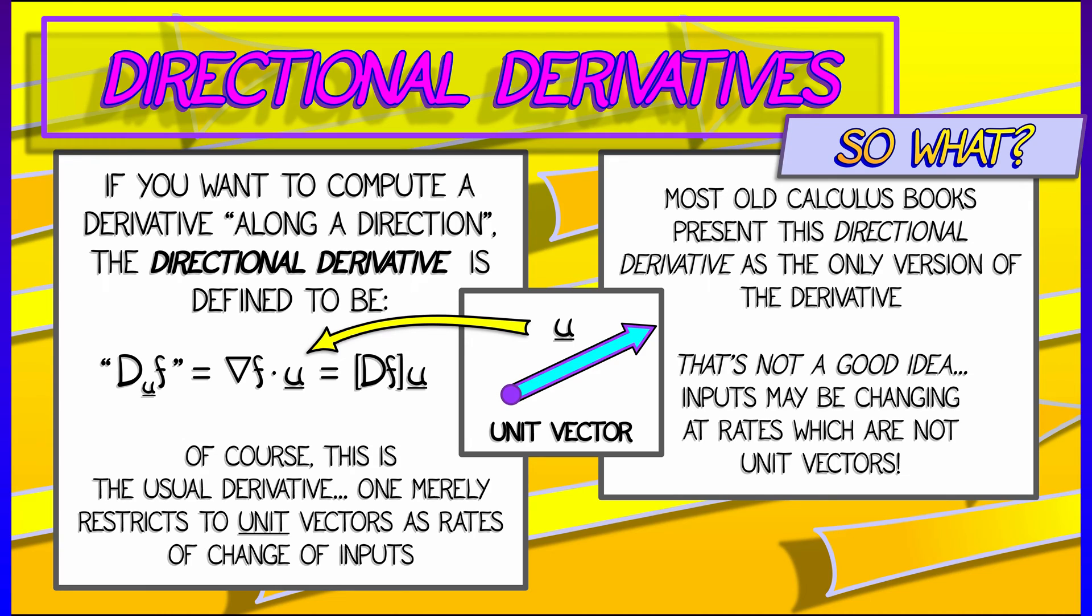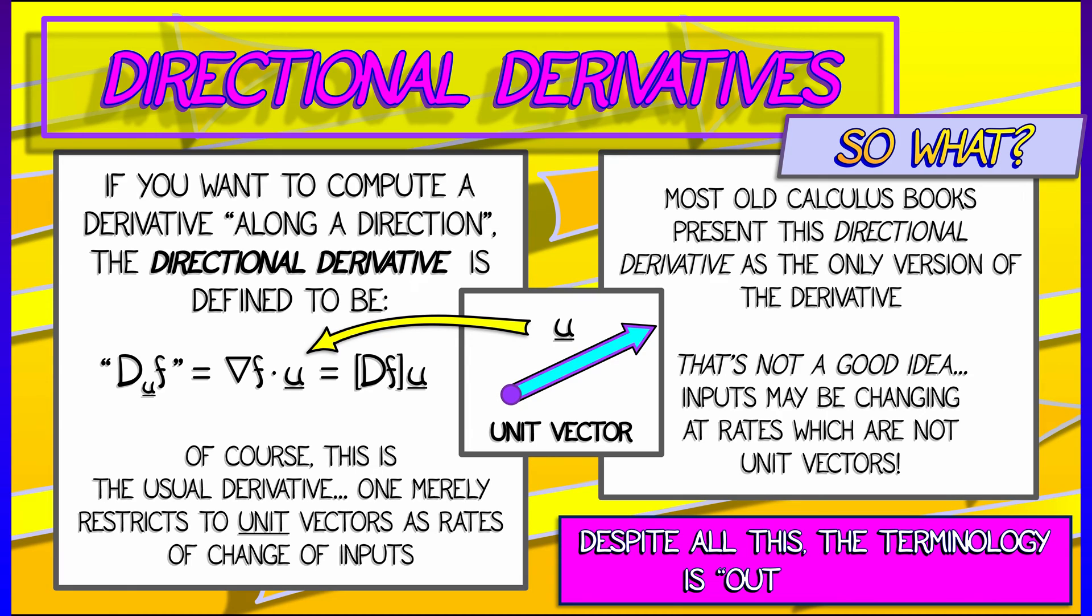This is such a bad idea. What happens when your inputs don't change at unit rates?